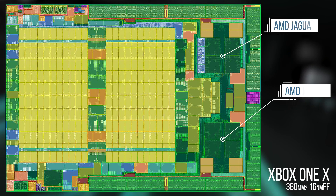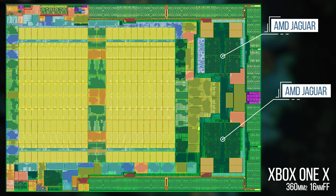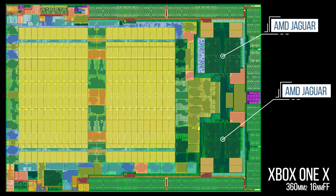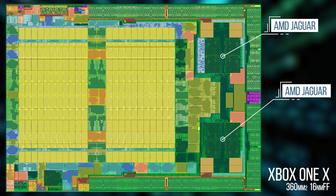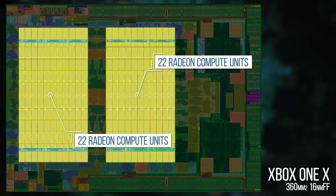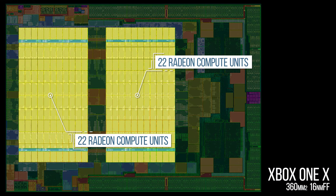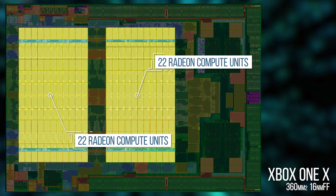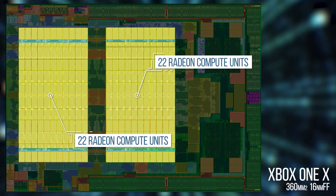Now let's bring in the Scorpio engine layout. Some extra cache is added to the Jaguar CPU clusters, but they are fundamentally still Jaguars with the same basic design. In terms of physical differences with the Pro chip, it only has four extra compute units — 44 in total, with 40 active in retail hardware. In terms of physical area, the Scorpio engine is less than 10% larger than the Pro.